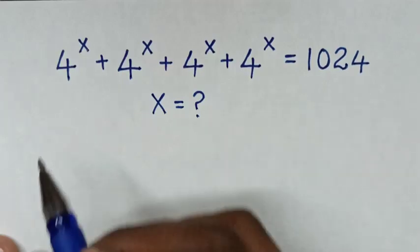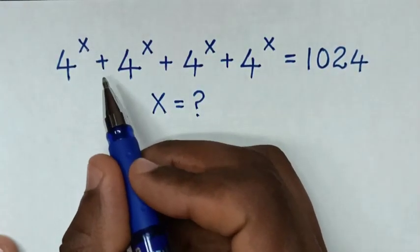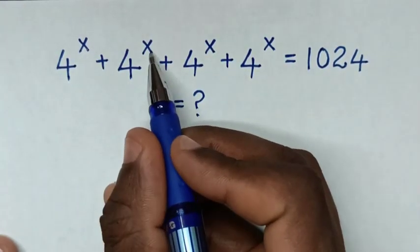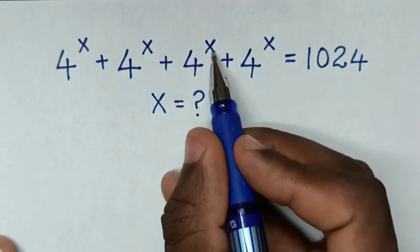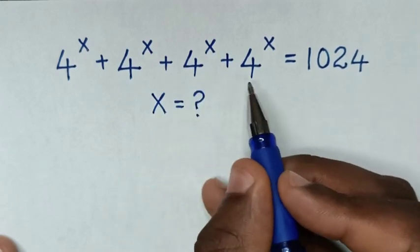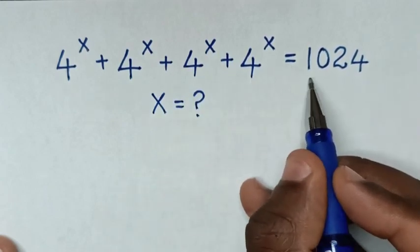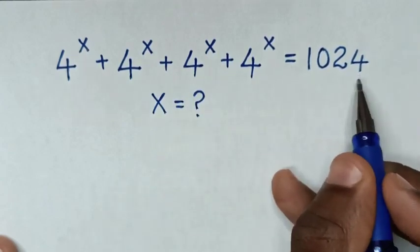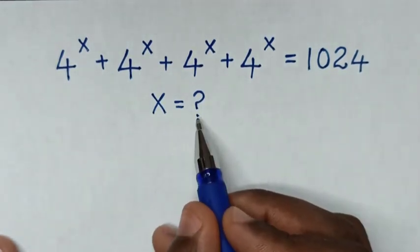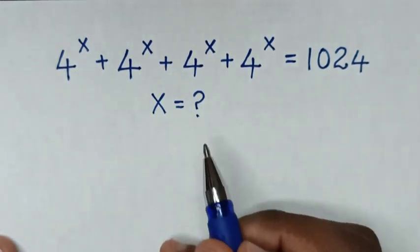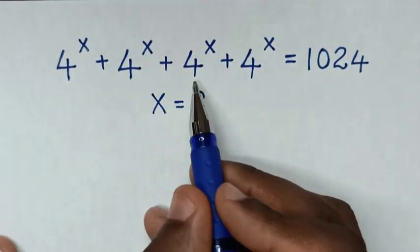Hello. How to solve 4 power of x plus 4 power of x plus 4 power of x plus 4 power of x is equal to 1024. To find the value of x from this equation.